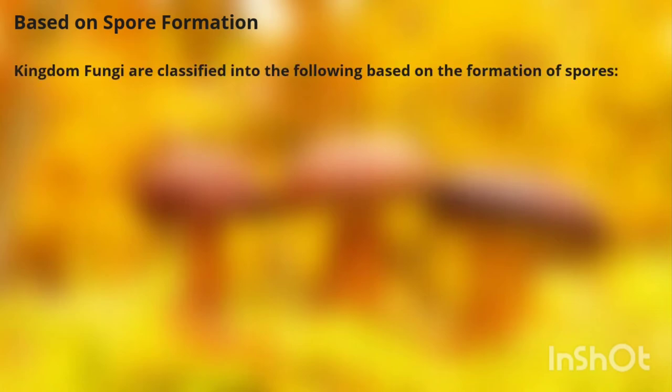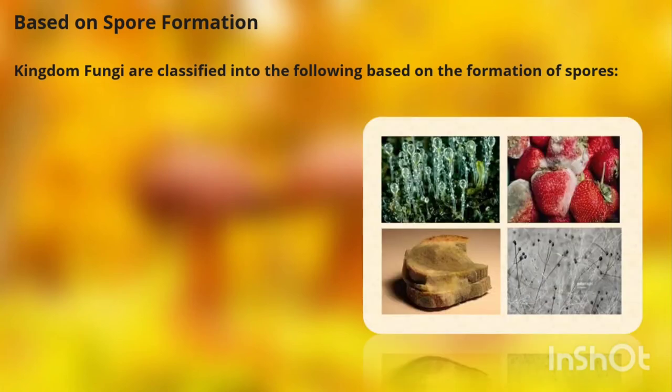The next type of classification is based on spore formation. Kingdom fungi are classified into the following groups based on the formation of spores. Number one is Zygomycetes or Zygomycota. These are formed by the fusion of two different cells. The sexual spores are known as zygospores, while the asexual spores are known as sporangiospores. The hyphae are without septa.